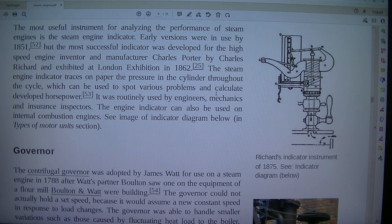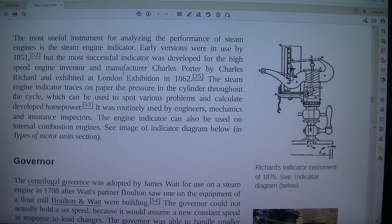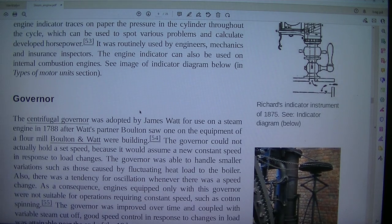Richard's indicator instrument of 1875. The most useful instrument for analyzing the performance of steam engines is the steam engine indicator. Early versions were in use by 1851, but the most successful indicator was developed for the high-speed engine inventor and manufacturer Charles Porter by Charles Richard and exhibited at London Exhibition in 1862. The steam engine indicator traces on paper the pressure in the cylinder throughout the cycle, which can be used to spot various problems and calculate developed horsepower. It was routinely used by engineers, mechanics and insurance inspectors. The engine indicator can also be used on internal combustion engines.